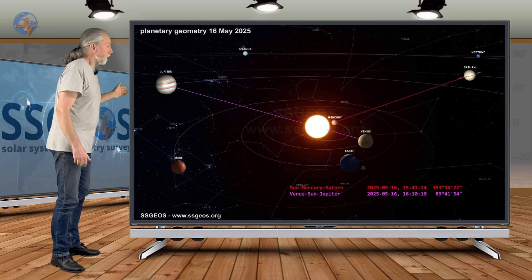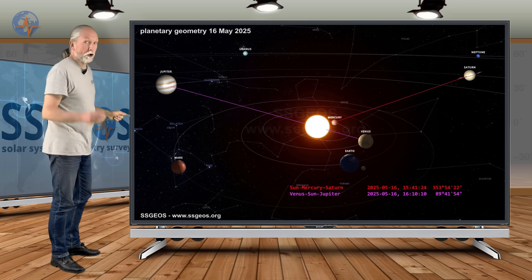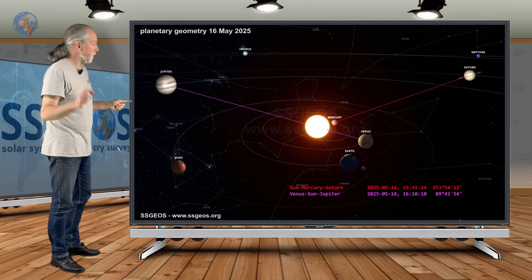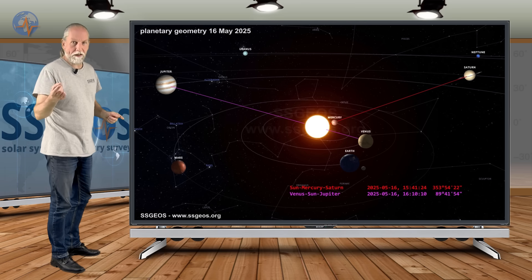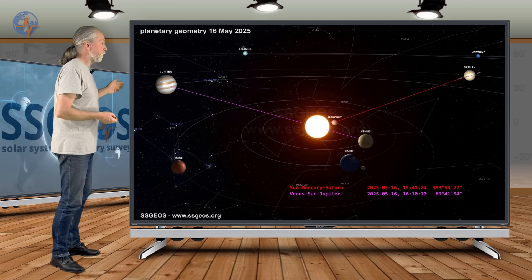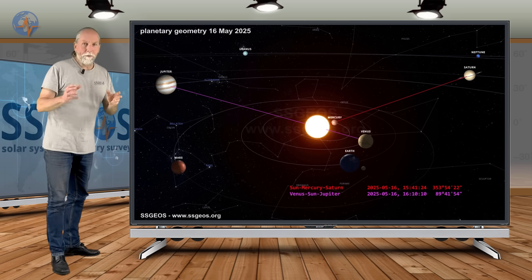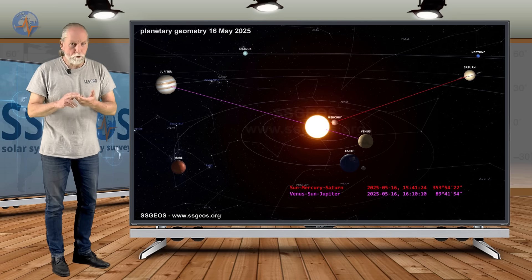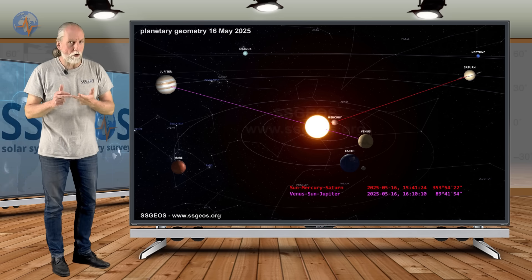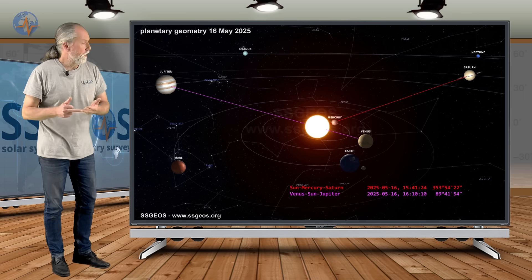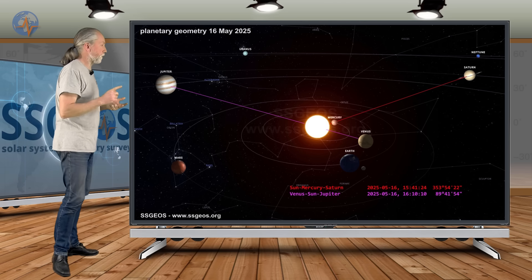Then we have a day later, Venus, Sun, Jupiter, critical conjunction there. That also happened before the 7.8 in Turkey two years ago. And it converges with Sun, Mercury, Saturn. Now keep in mind, we have two planetary conjunctions with Mercury and one with Venus and both involving the Sun. That's a critical convergence right there on the 16th.